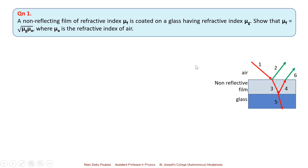To solve this, let us assume that light falls on such a medium. Light ray 1 falls on this non-reflecting film, producing a reflected component ray 2 and a transmitted component ray 3. Ray 3, when it falls upon the glass surface, divides into a reflected component ray 4 and transmitted component ray 5. From ray 4 we get transmitted component ray 6. For this film to be non-reflective, rays 2 and 6 must interfere destructively, and for complete destructive interference their amplitudes must be equal.